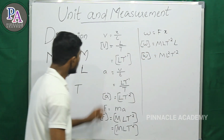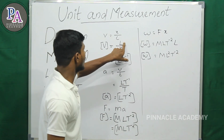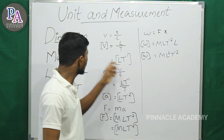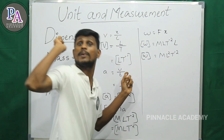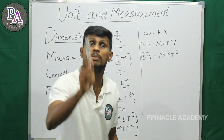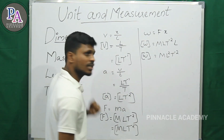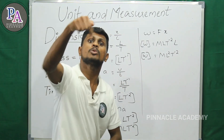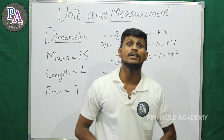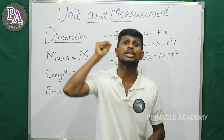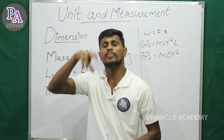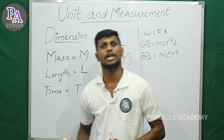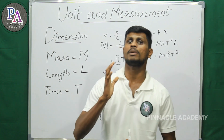Now let's work with another example. Looking at velocity — the dimension of velocity shows that length over time gives L T raised to minus 1. This is what dimension analysis means: expressing physical quantities in terms of fundamental physical quantities.